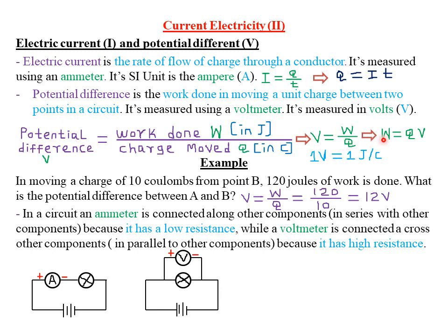We can also make work done the subject of the formula by multiplying both sides by Q. Therefore, work done W = Q × V, the product of charge and potential difference. From the relationship V = W/Q, since potential difference is measured in volts, work done in joules, and charge in coulombs, we can deduce that one volt equals one joule per coulomb.